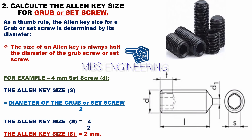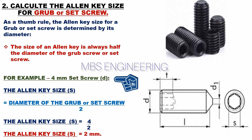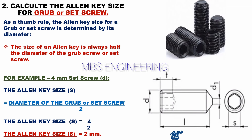The allen key size S equals the diameter of the set screw or grub screw divided by two. We will understand the sample calculation for a 4 mm diameter set screw. Please refer to the snaps: S is the allen key size, D is the diameter of the set screw or grub screw, and L is the length of the set screw or grub screw. We calculate: S equals 4 divided by 2, therefore the allen key size S equals 2 mm.